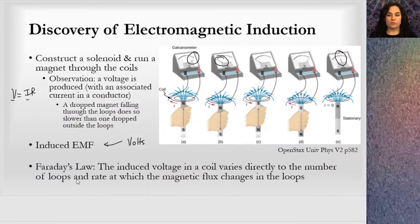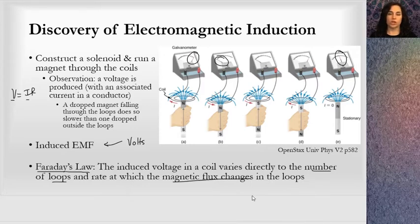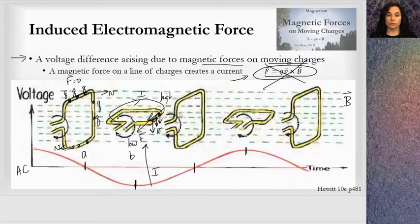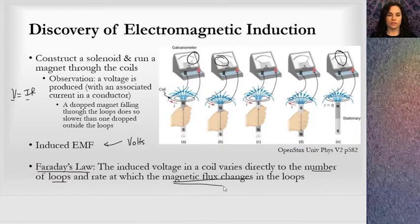All this ties down to Faraday's Law. The induced voltage in a coil varies directly with the number of loops and the rate at which the magnetic flux changes — that's where this whole lecture started. Going back to the rotating coil, we can think about the amount of flux through the area of this loop changing as it rotates. The fundamental principle is that we're looking at changing magnetic flux.